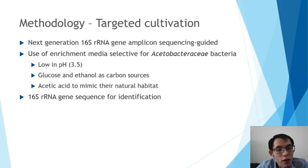Strain F3b2 also shows growth at a high glucose percentage of 40%. Based on phylogenetic analysis of the 16S rRNA gene sequences, strain F3b2 was placed on a distinctive lineage in the family, showing that it represents a phylogenetically distinctive taxon in the family Acetobacteraceae. An additional phylogenomic analysis using 96 concatenated core gene sequences also revealed that strain F3b2 represented a distinctive lineage in the family.